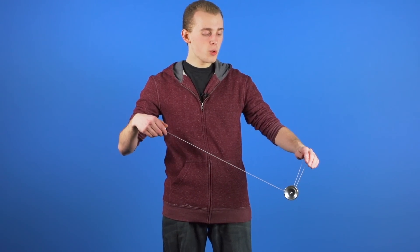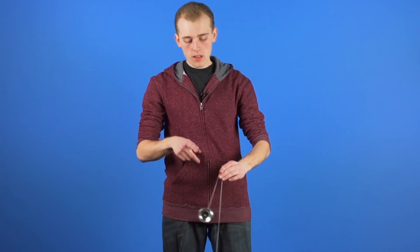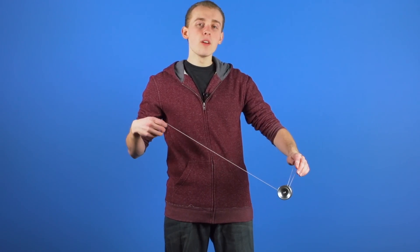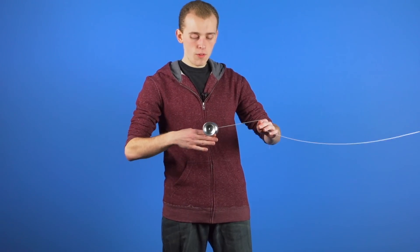we're going to drop the counterweight and swing the yoyo toward our throw hand side, but rather than landing it into a trapeze, instead we're going to land the yoyo on our throw hand for a finger grind.